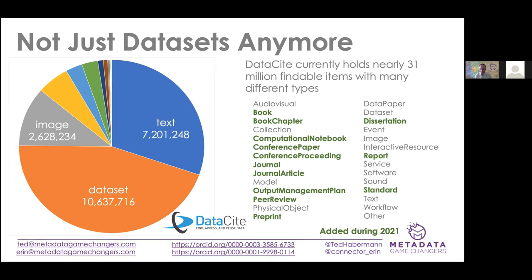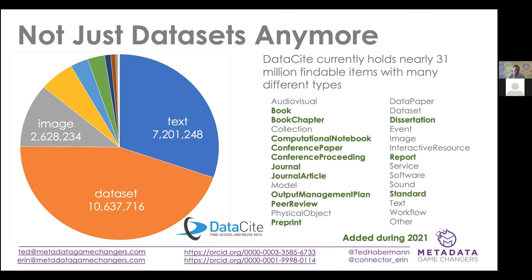You can see a significant increase in the number of kinds of things that Datacite is supporting — allowing you to provide metadata for. This growth reflects a realization by Datacite and the Datacite metadata working group, which I'm lucky to participate in, of the importance of identifiers for a broad and increasing number of things. We will be adding at least instruments to this list in the next release of the schema.